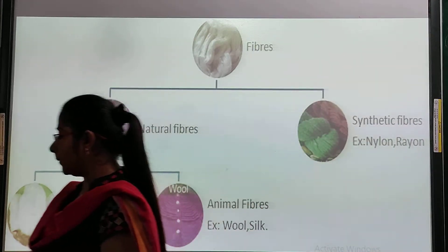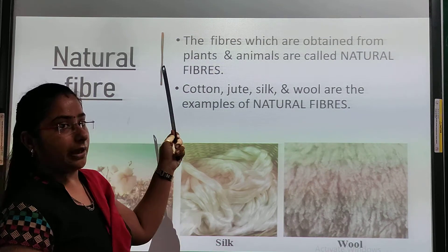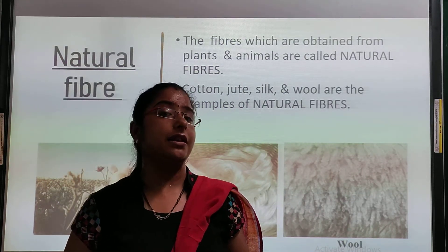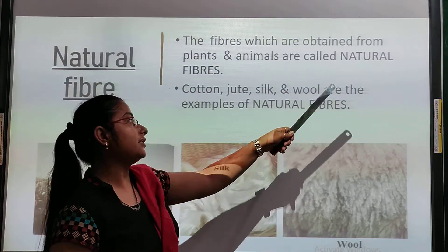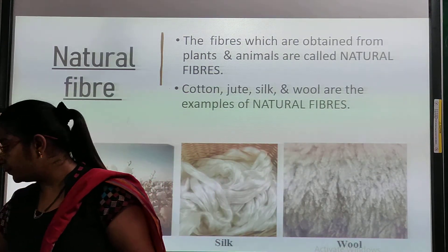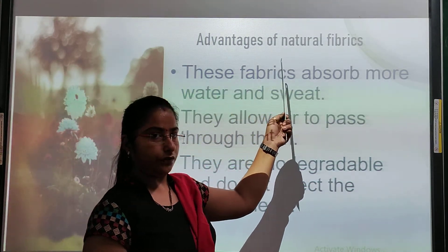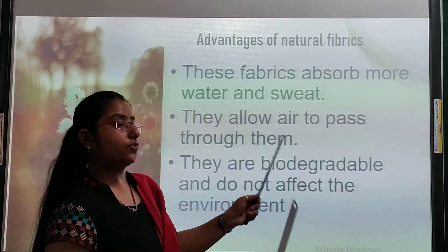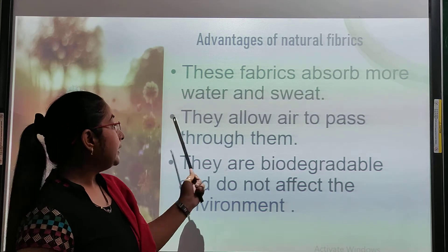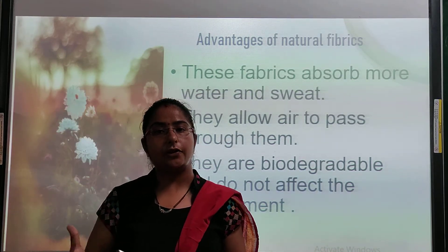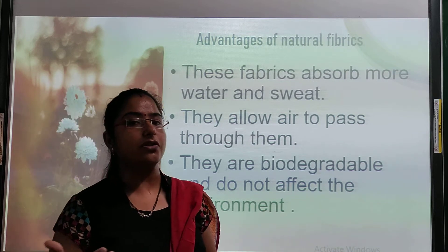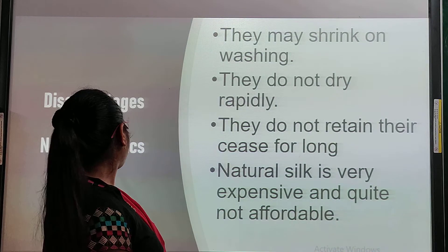Now we will study each type in detail. First, natural fibers. The fibers which are obtained from plants and animals are called natural fibers. Examples are cotton, jute, silk, and wool. An advantage of natural fibers is that they absorb more water. They are also biodegradable — meaning they decompose — and do not harm the environment.